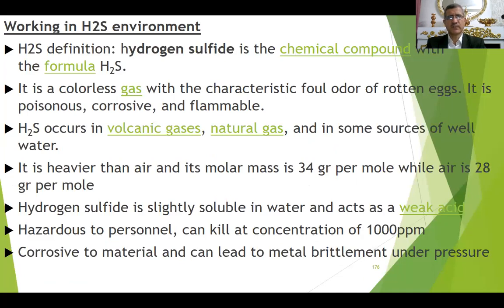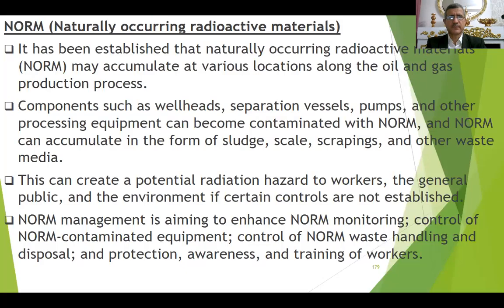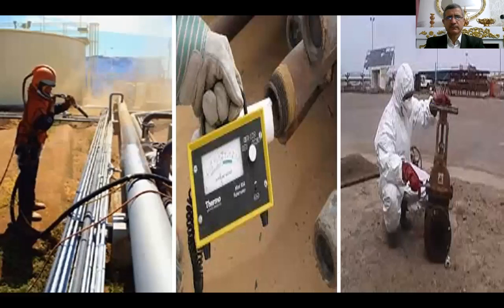How to work in the H2S environment: what is H2S, its definition, hazards, controls, and safety procedures — how to protect yourself and others. NORM also — naturally occurring radioactive materials — how it is dangerous and how we control it. What is NORM: alpha, beta, gamma — how do we protect, how do we regulate our work on it, and how do we measure the gamma and the particles of alpha and beta.